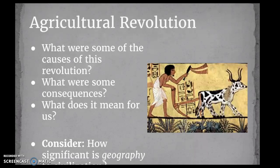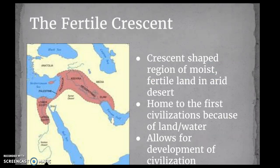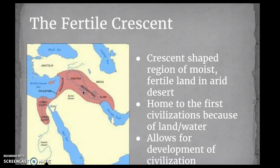Today we're going to focus on geography and how geography helps shape the way that Mesopotamian civilization develops. If you look over here, this is the Fertile Crescent. Mesopotamia is right in the middle of the Fertile Crescent, and this is a huge region of very moist, fertile land, home to many of the first civilizations — Mesopotamia and Egypt being those first two, and certainly the two big ones we will look at at the beginning of our course. That fertile land really allows for the development of very successful civilizations.